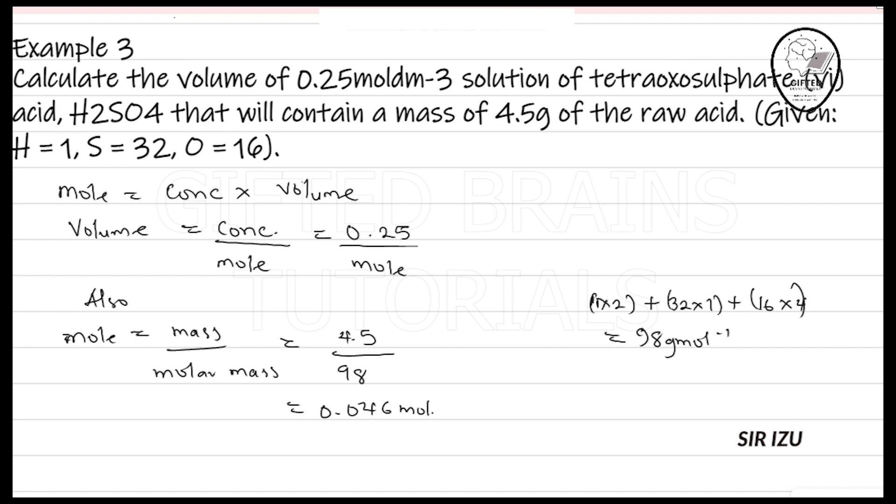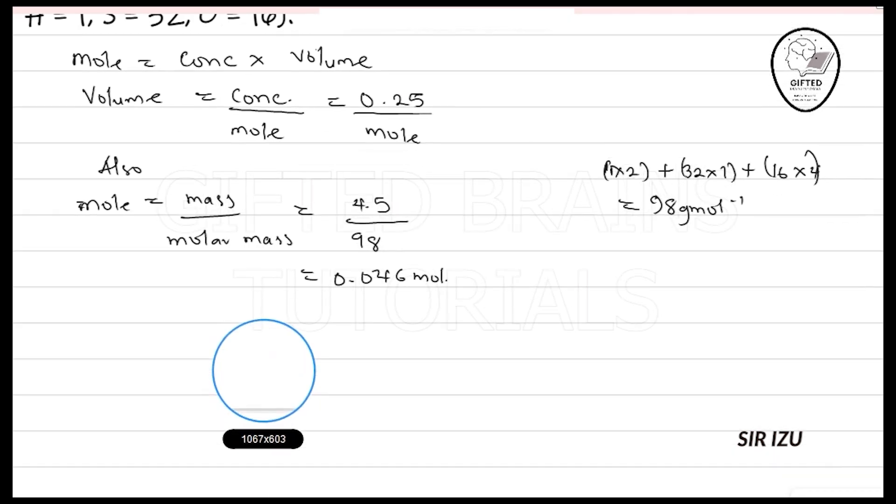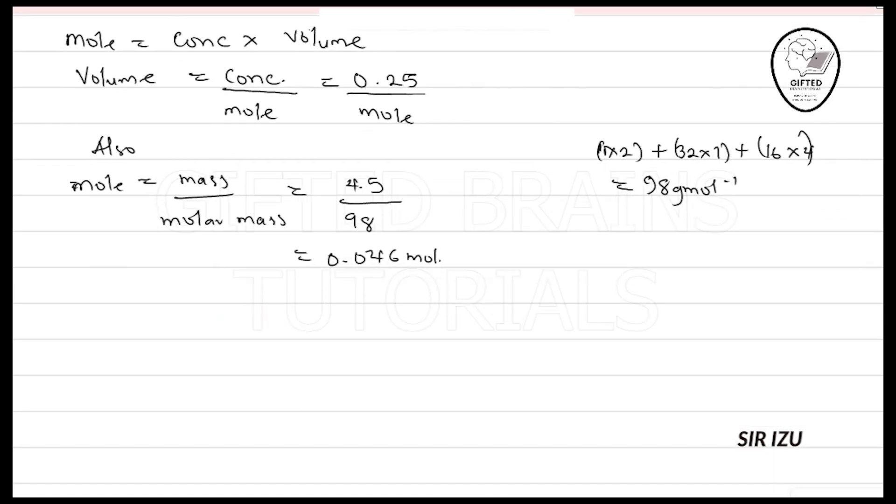This is the mole I will now use to get the volume. At the end of the day, my volume equals concentration 0.25 over mole 0.046, and this will give us 5.43 dm³.